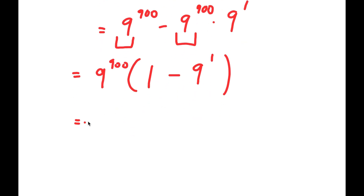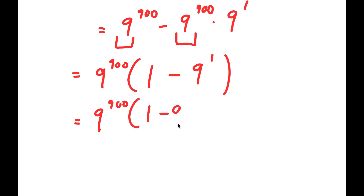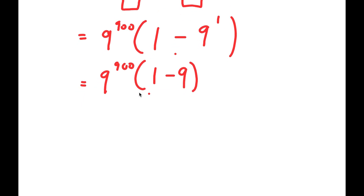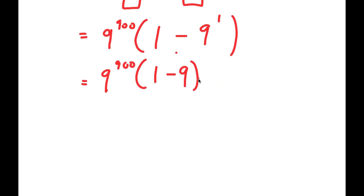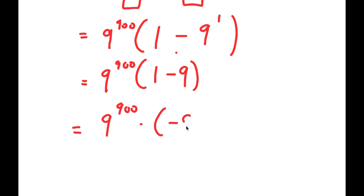So I get nine to the power of nine hundred times one minus nine to the power of one, which is the same thing as nine to the power of nine hundred times one minus nine. And one minus nine is equal to negative eight.